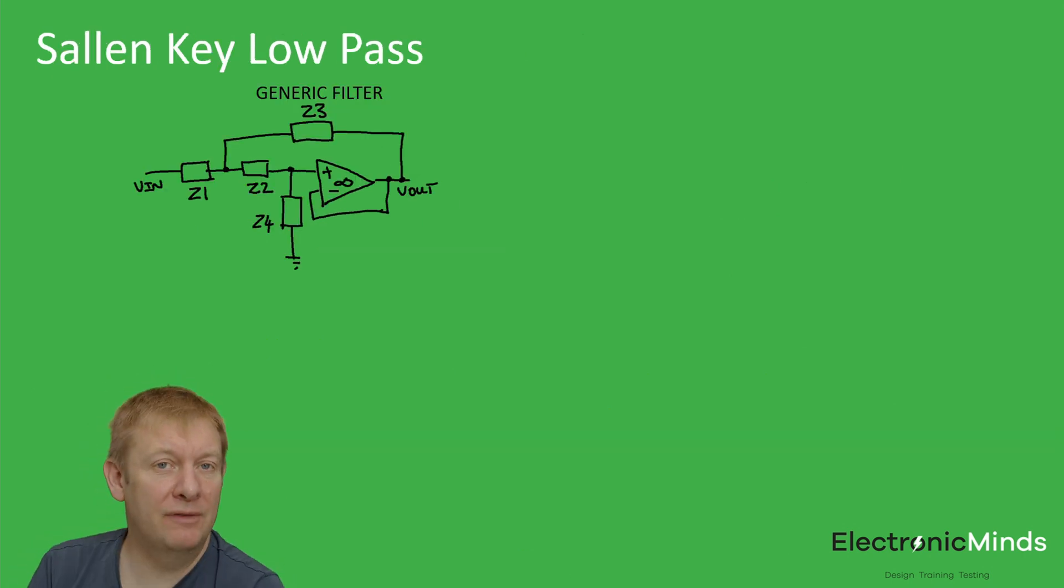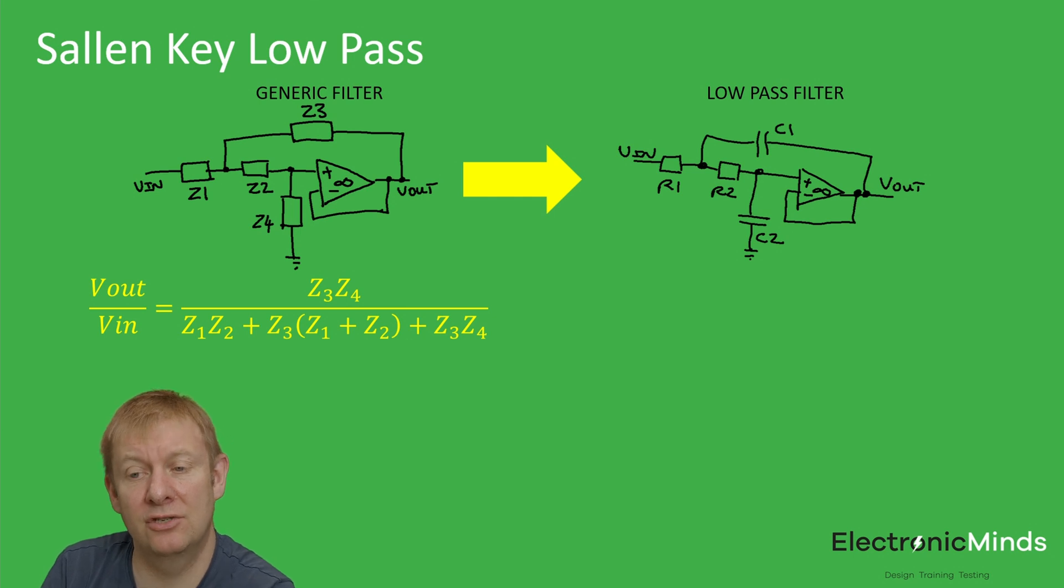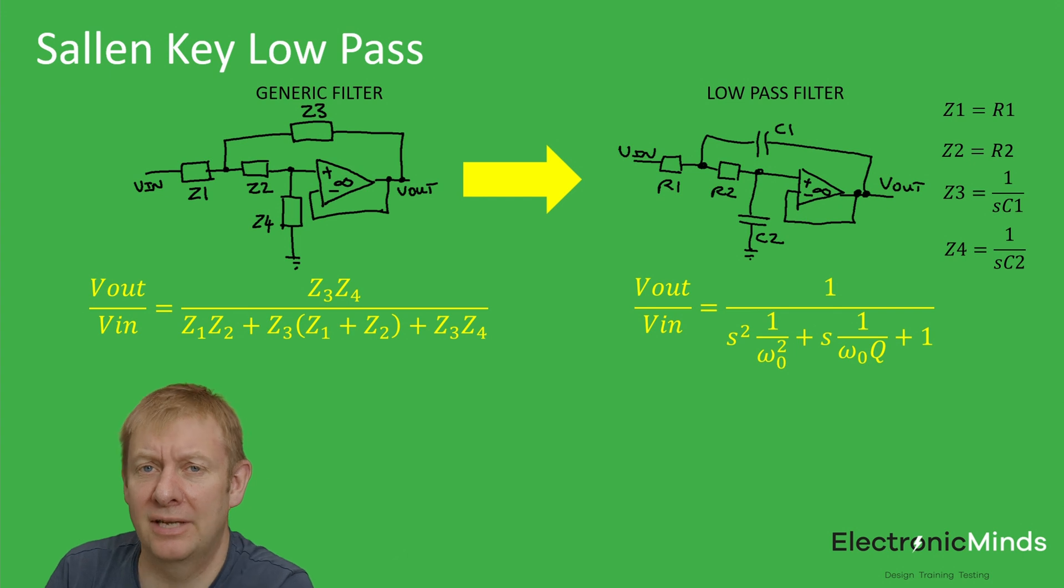So far we've talked about a generic Sallen-Key network. However, in practice we want to actually simulate and build a low-pass filter. We need to replace the Z terms in the schematic circuit with actual resistors and capacitors. If we do that, we build our second-order low-pass filter. If you work through the maths, you end up with this expression, which is a classical second-order low-pass filter with a cutoff frequency omega naught and a damping factor.